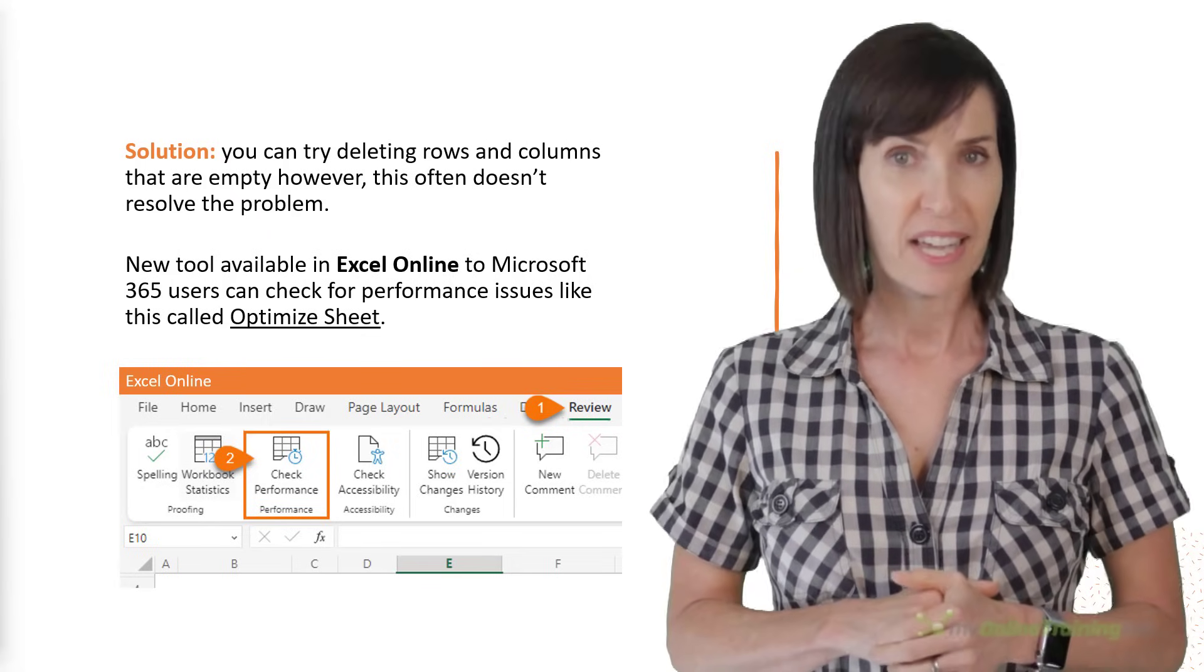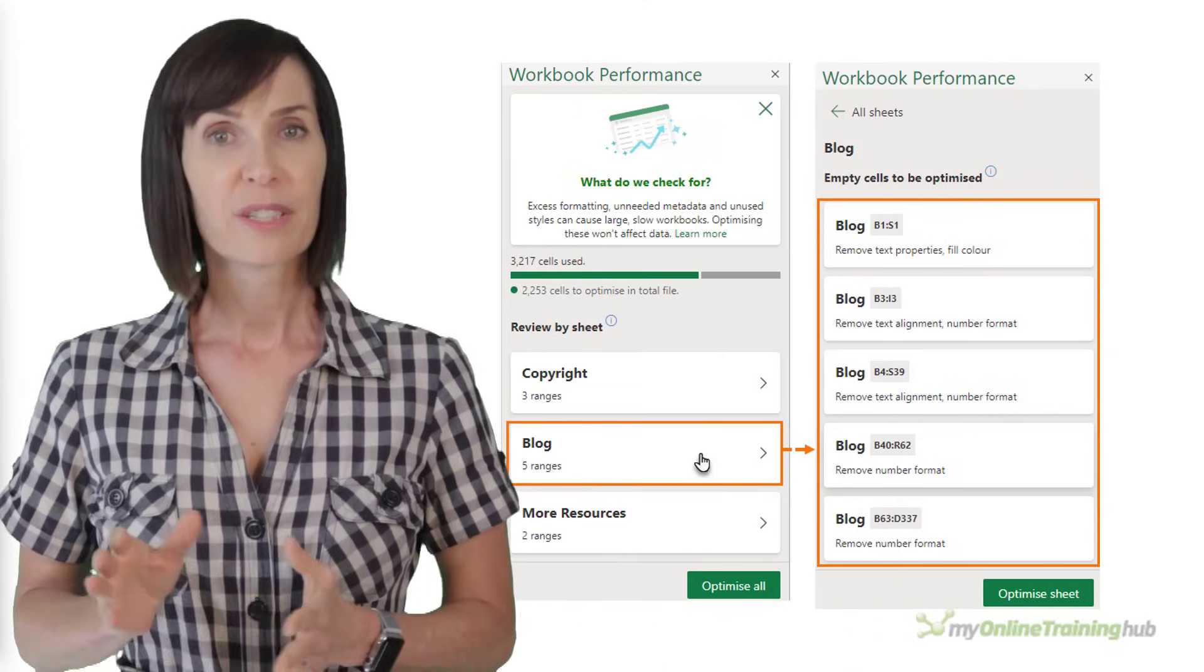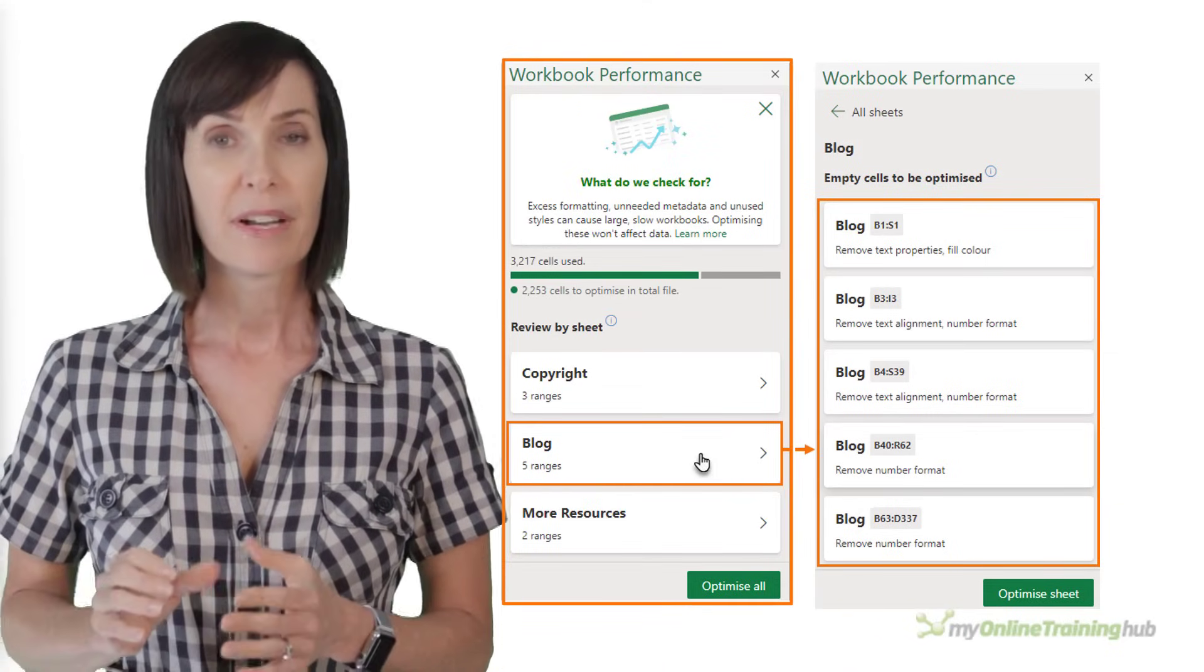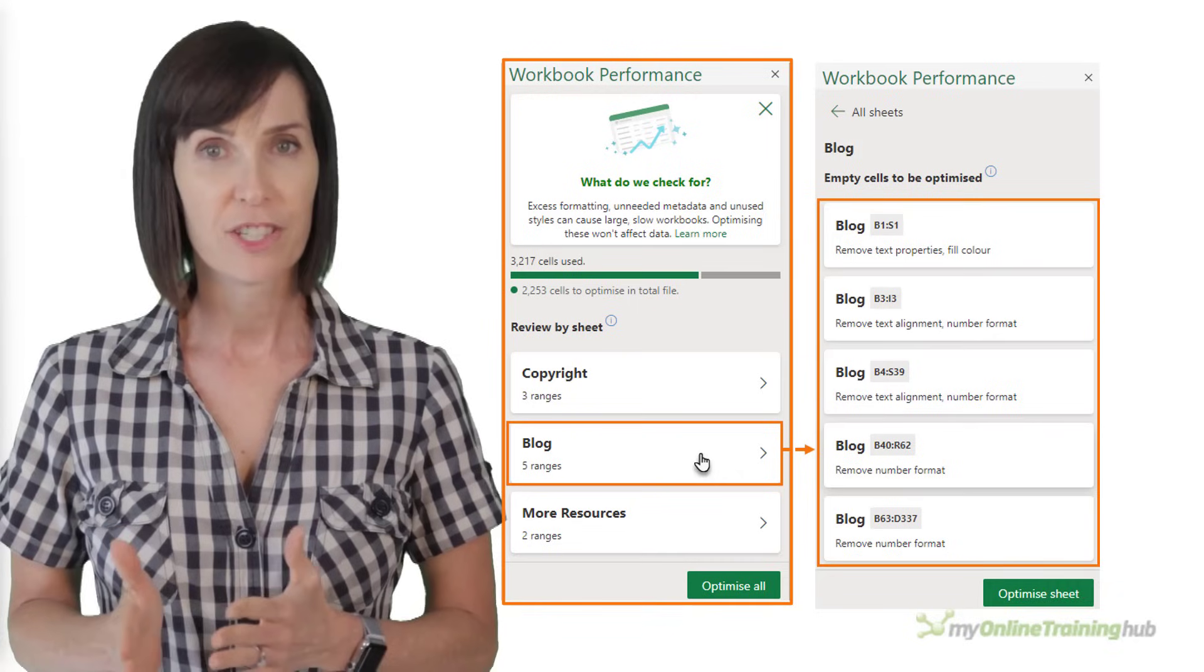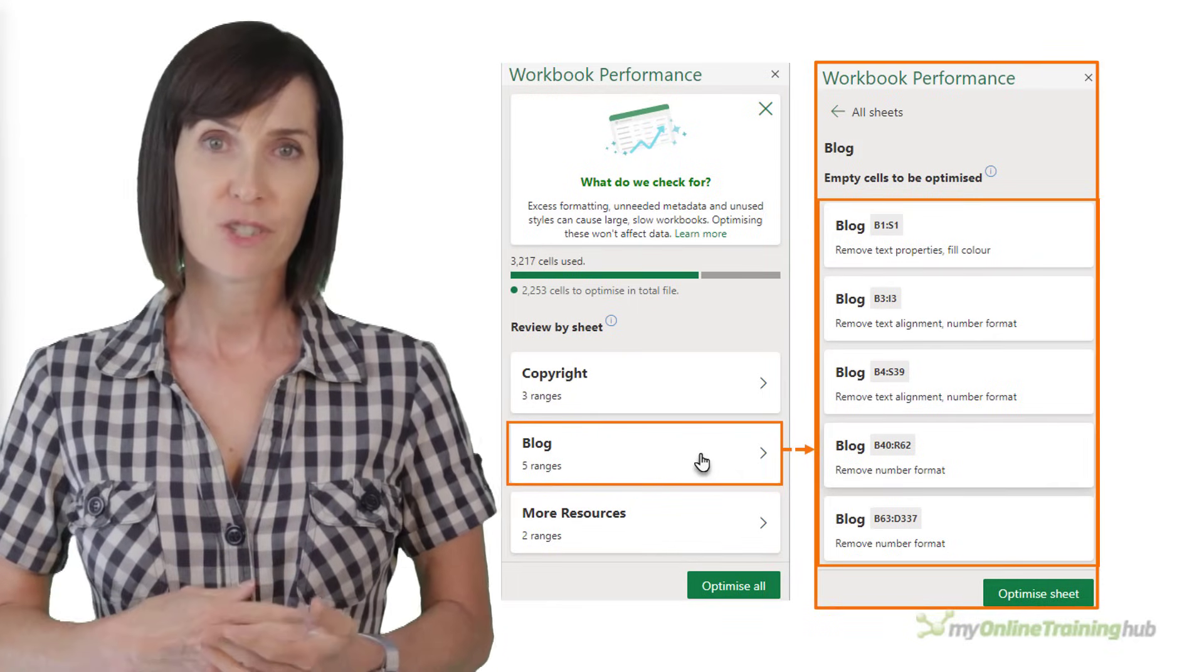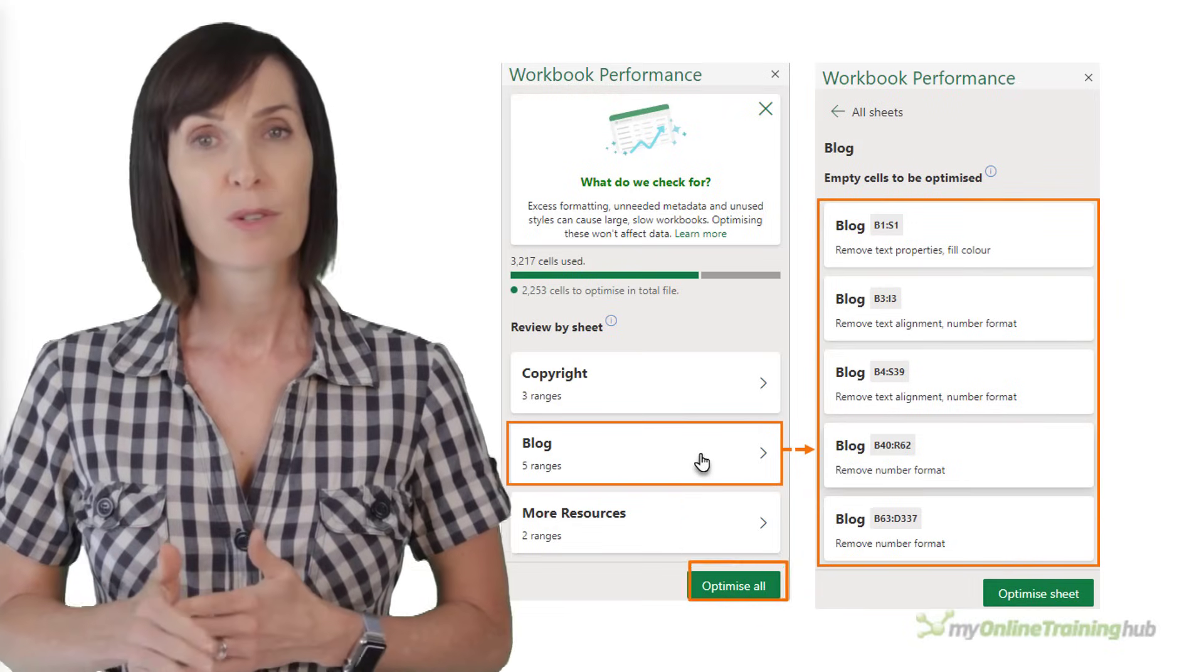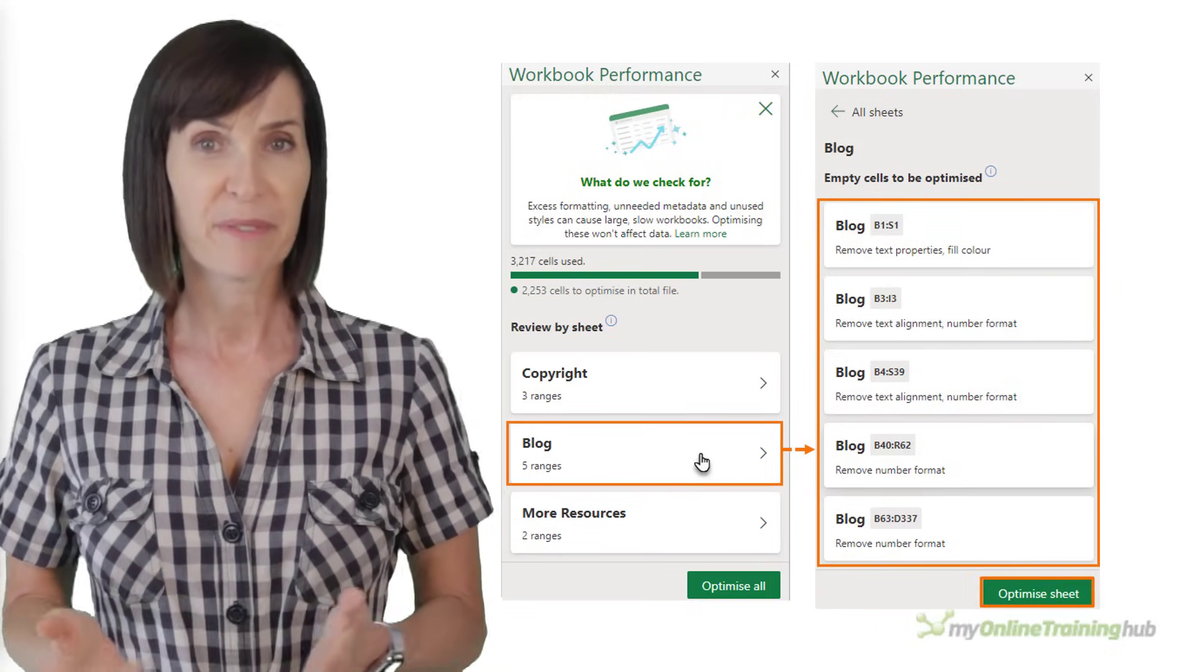Clicking on the Check Performance button brings up the Workbook Performance pane. This summarizes the sheets that contain any issues. From there, you can see a list of the individual cells or ranges and the issues. Clicking Optimize All or Optimize Sheet will remove them for you.